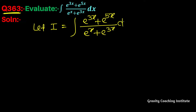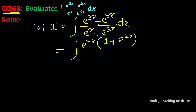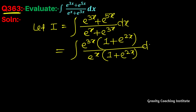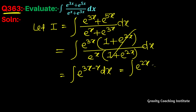The numerator has e^3x as a common factor, giving (1 + e^2x). The denominator has e^x as a common factor. After cancellation, this becomes e^(3x - x) equal to e^2x dx.